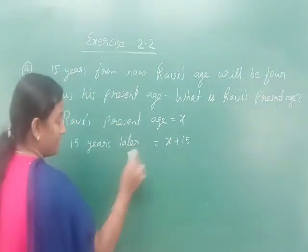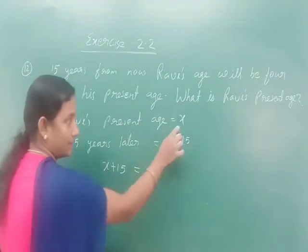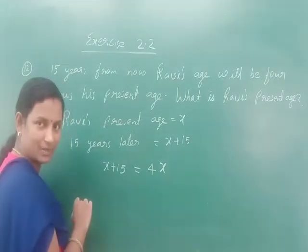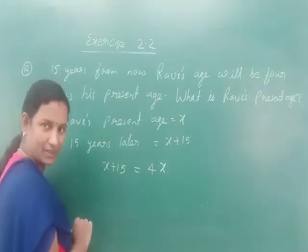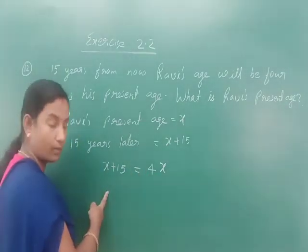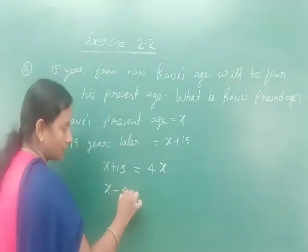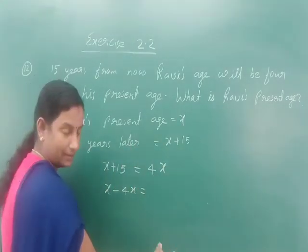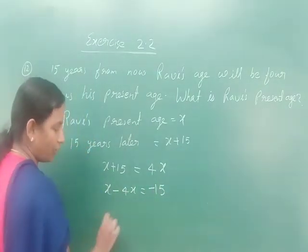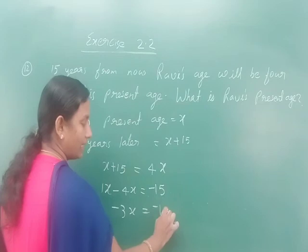Given that 15 years from now, Ravi's age will be 4 times his present age. So the equation is: x + 15 = 4x. Shifting 4x to the left: x - 4x = -15, which gives -3x = -15.